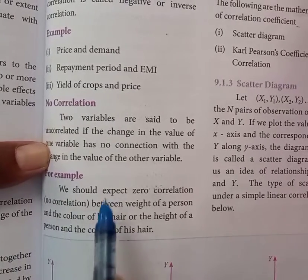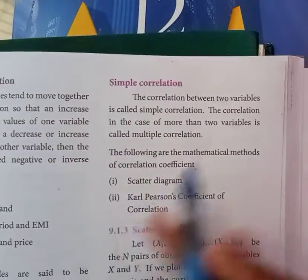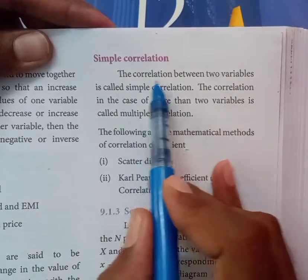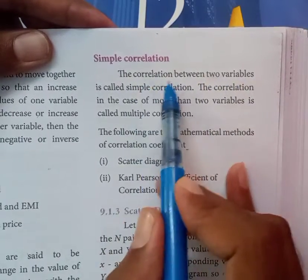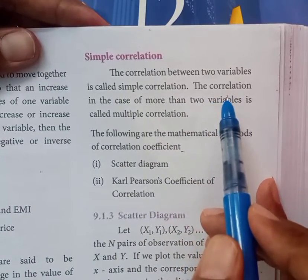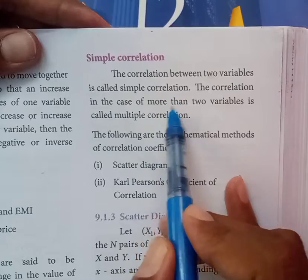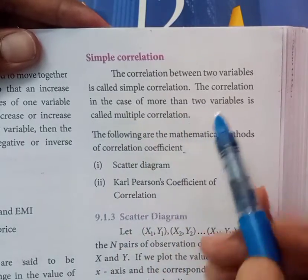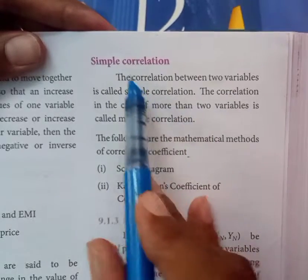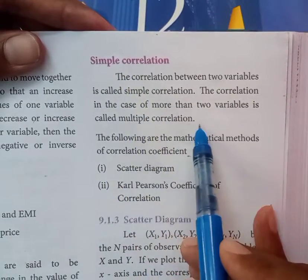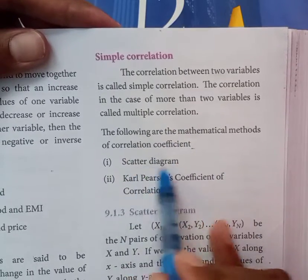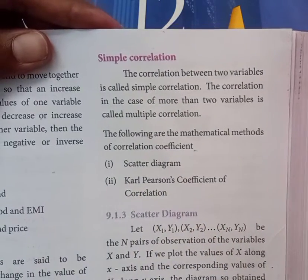When we study the relationship between only two variables X and Y, that is called simple correlation. When the correlation involves more than two variables — such as X, Y, Z or multiple variables — that is called multiple correlation. The mathematical methods of measuring correlation include the scatter diagram and the correlation coefficient.